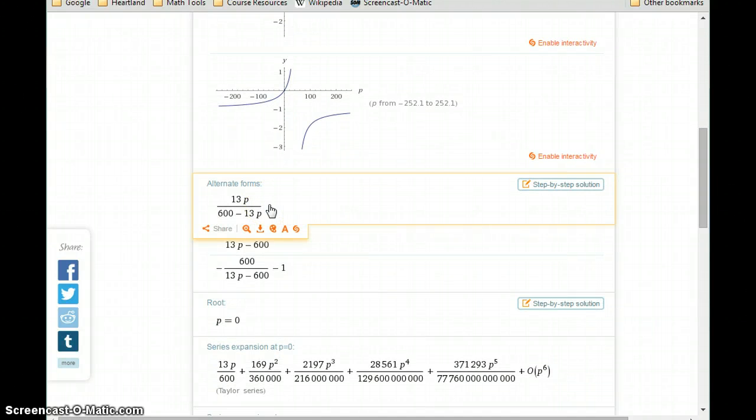These are some different reduced versions of that same function. This function that initially started with some larger numbers, we can see that we could divide through. We could simplify this to 13P over 600 minus 13P.